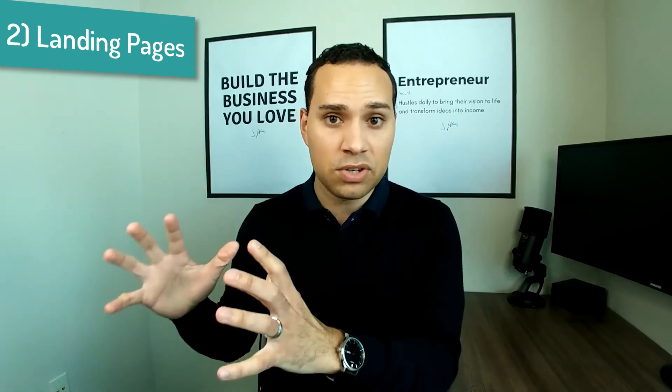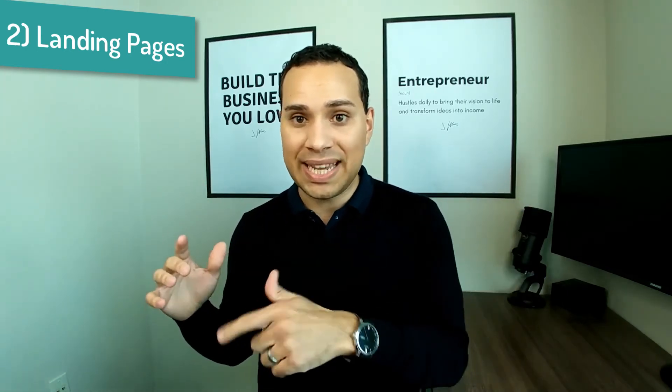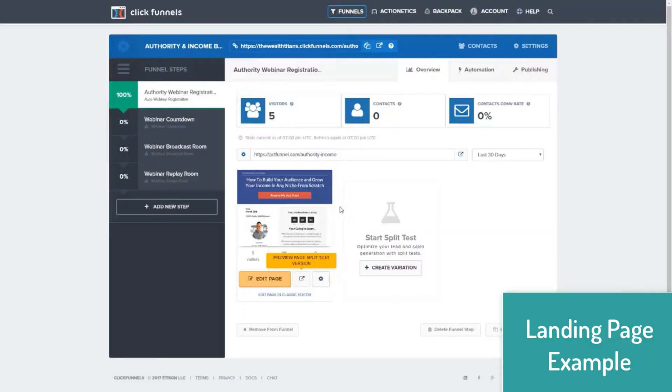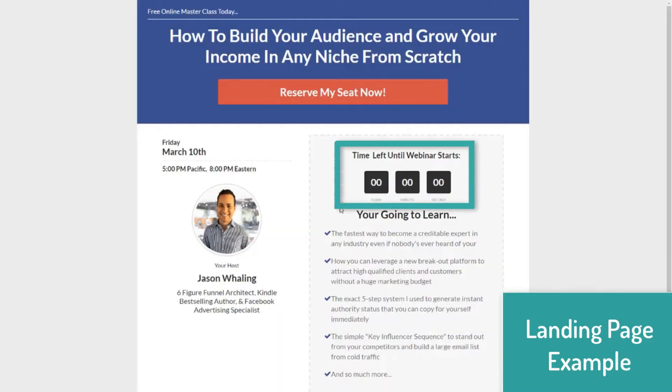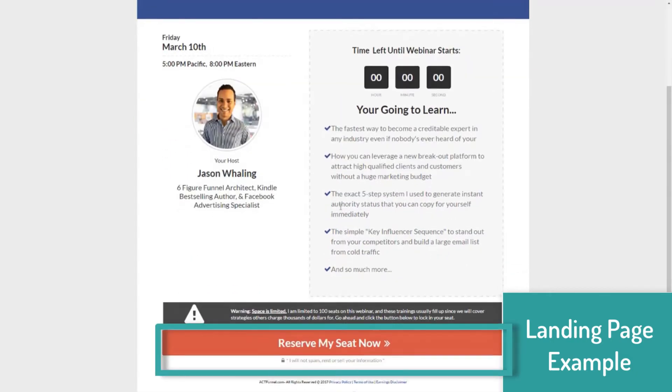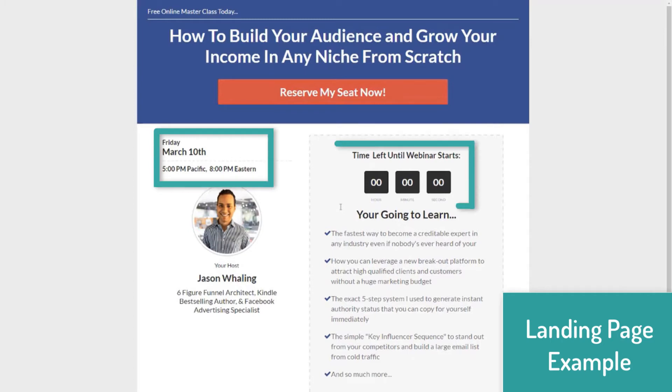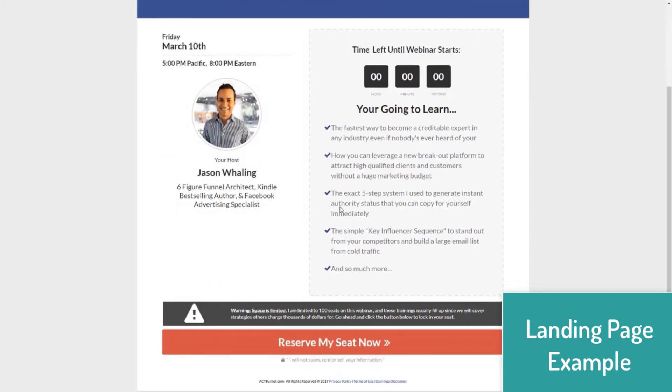That leads me into reason number two, which has to do with landing pages. Depending on what landing page builder you're using, you can build the landing page you want or use one of the Stealth Seminar templates. Wherever your landing page is coming from, they will take a copy of it and put it on their own servers — which is nice if you're using WordPress, because you get the page speed increase that comes from a SaaS application even if your original page was on a slower WordPress site. The countdown timers and buttons will automatically be integrated, so you don't have to worry about embedding your button or figuring out the countdown timer.